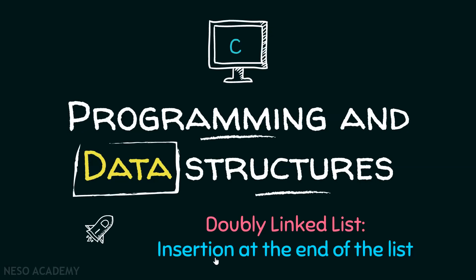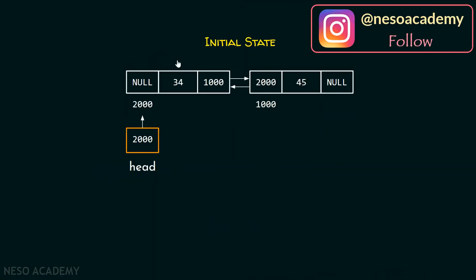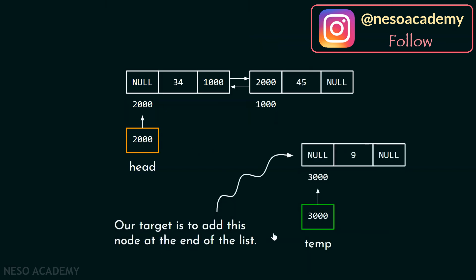In this presentation, we will learn how to insert a node at the end of the doubly linked list. Let us assume this is the initial state of the doubly linked list — taken from the previous lecture. We have a head pointer pointing to the first node of this list, and our target is to add a new node at the end of this list.